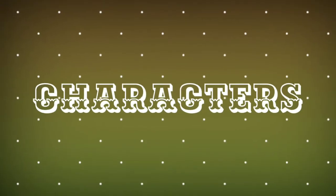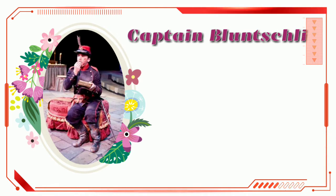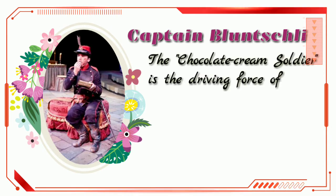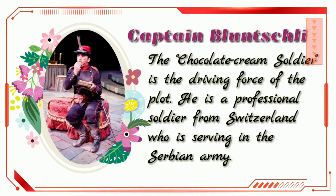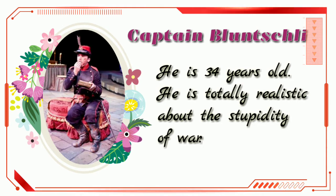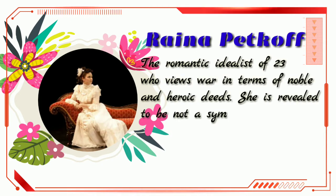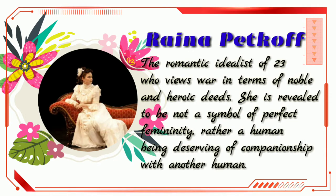Let's now get familiar with the characters of The Chocolate Cream Soldier. We have only two main characters. The first is Captain Blanchly, the chocolate cream soldier, who is a driving force of the plot. He is a professional soldier from Switzerland serving in the Serbian army, 34 years old and totally realistic about the stupidity of war. Then we have the female character, Raina Petkoff — a romantic idealist of 23 who views war in terms of noble and heroic deeds. Raina is revealed to be not a symbol of perfect femininity but rather a human being deserving of companionship.